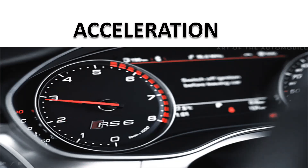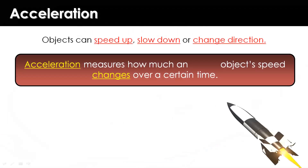Acceleration is a simple concept. An object can speed up, slow down, or change its direction. Acceleration measures how much an object's speed changes over a certain time. It is the change in velocity divided by time.